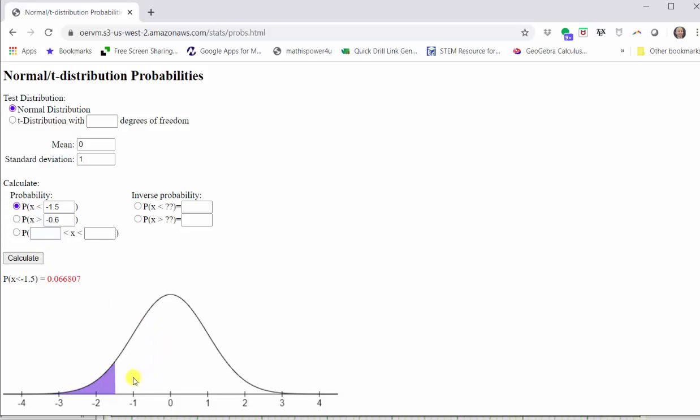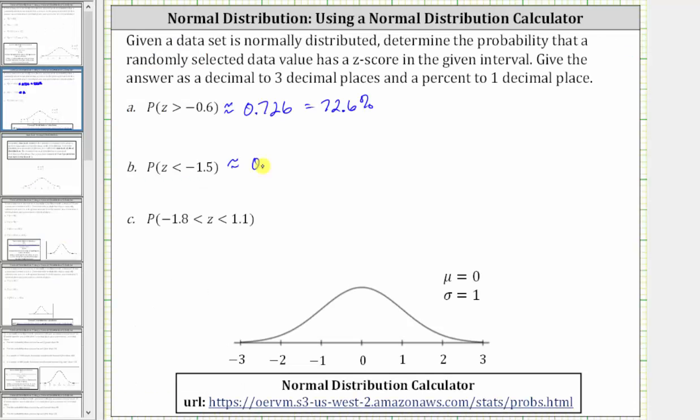Now again, looking at the graph, notice how the area below the curve to the left of negative 1.5 is shaded. This area represents the probability, which is shown in red. To three decimal places, we have approximately 0.067, which is equal to 6.7%.